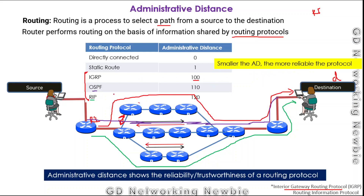In this case, the router will select the first path indicated by IGRP — the most reliable protocol — and will not select the paths given by the other protocols. These administrative distance values are numeric defaults assigned to routing protocols. The network administrator can actually change these values and give priority to a specific protocol by increasing or decreasing its administrative distance.